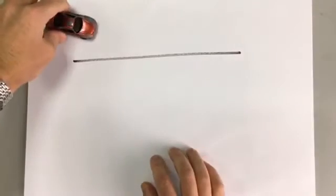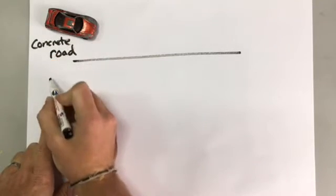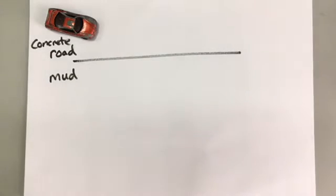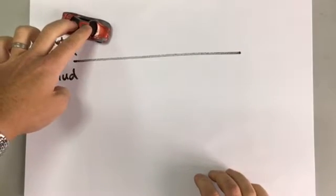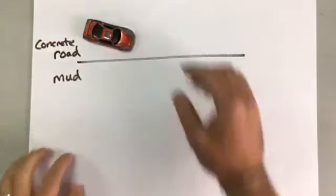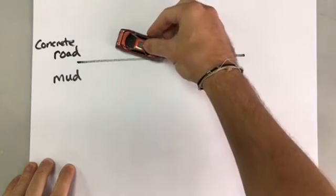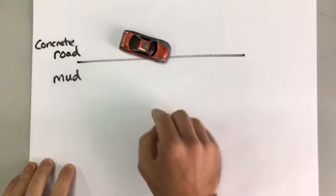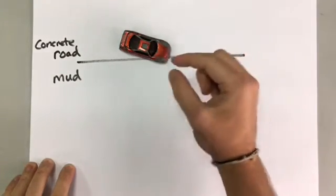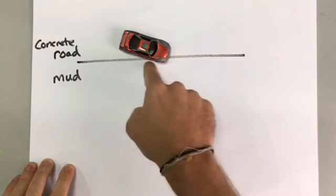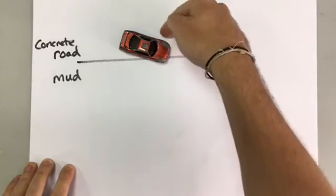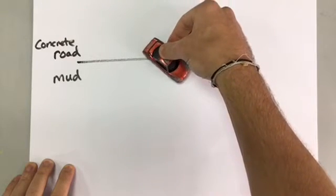Refraction is a change in direction. If you imagine a car is driving along a road — this is the road, and it's made of concrete — and this is mud. If the car is driving along this road at an angle, eventually it reaches the edge and these wheels here go into the mud. The mud is going to slow those wheels down, but these wheels are still going the same speed. So if this side of the car slows down but this side of the car keeps going faster, the car is going to turn like that.